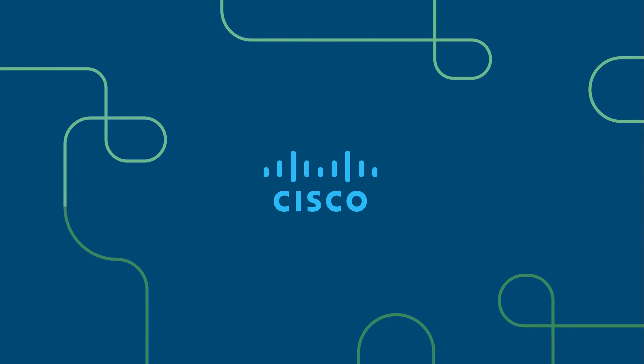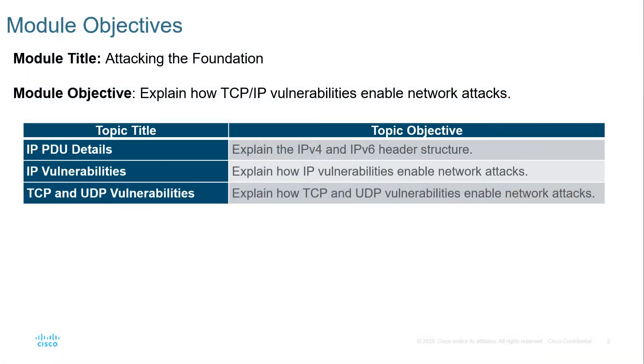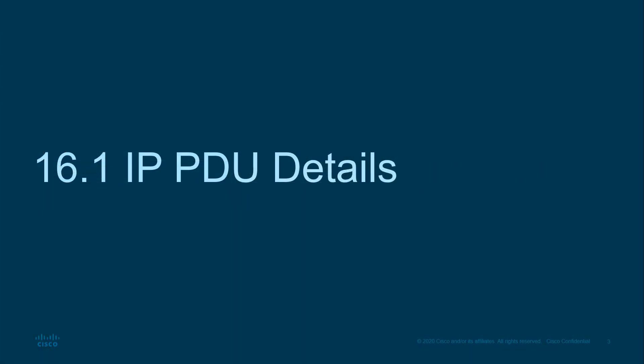We are focusing on understanding the Cisco cybersecurity operations fundamentals course, known as CBR OPS module 16: Attacking the Foundation. Here we're looking at IP PDU details, IP vulnerabilities, and both TCP and UDP vulnerabilities to explain how we can exploit them. Let's jump right in.